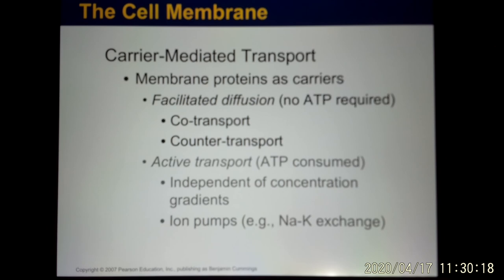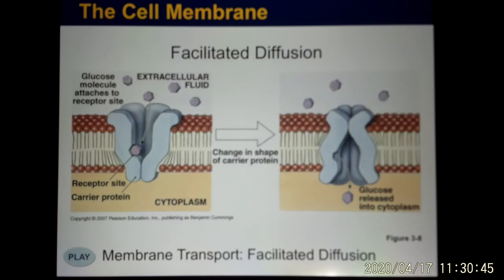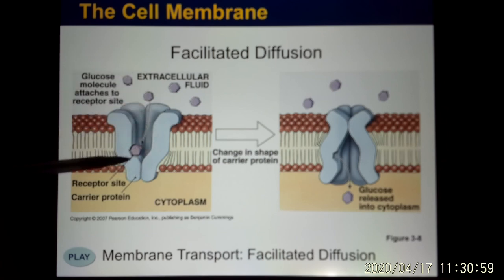Facilitated diffusion does not require ATP — no biological energy needed. It transports molecules from high concentration to low concentration using membrane proteins. It can involve cotransport or counter-transport, moving more than one molecule in the same or opposite direction. A good example is the glucose carrier: after a meal, blood sugar is high, and the glucose carrier moves glucose from high to low concentration. Because molecules still move from high to low, no ATP is required.